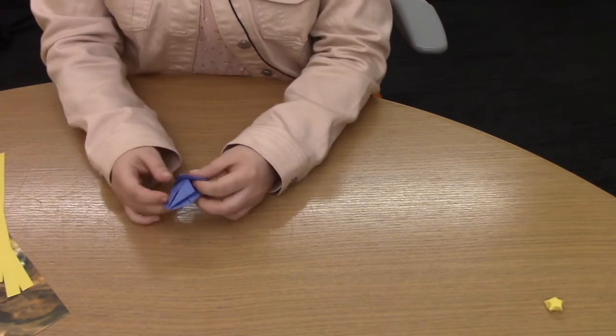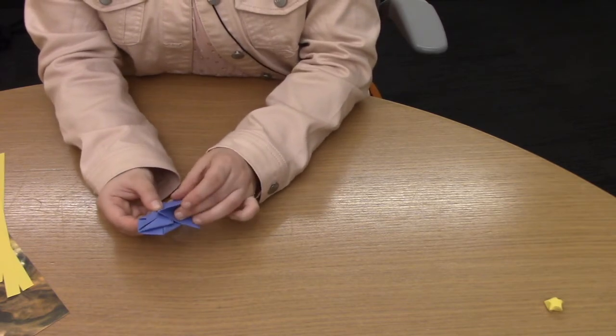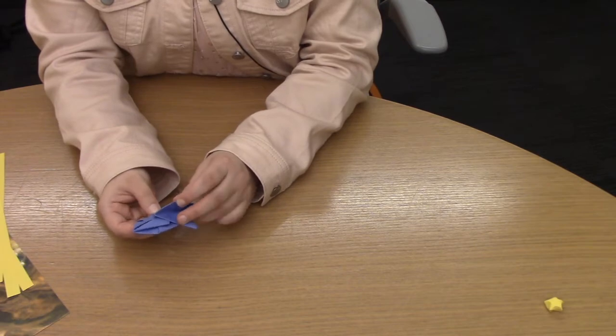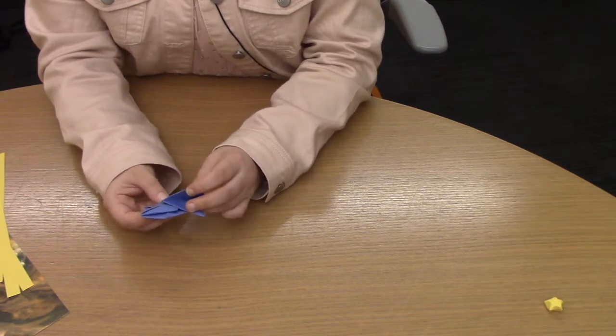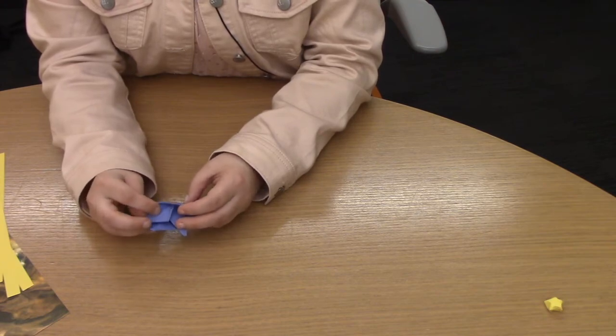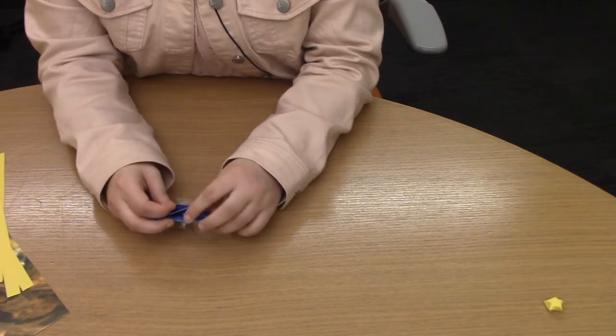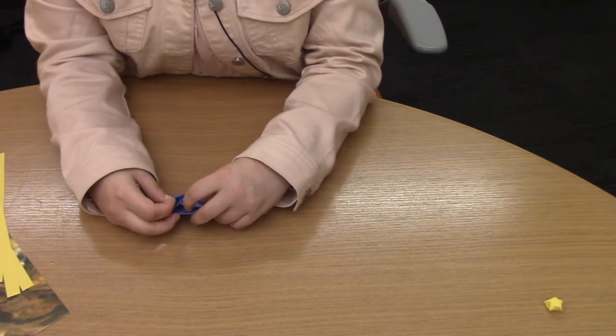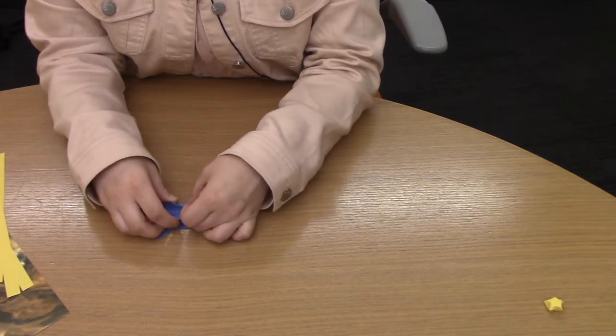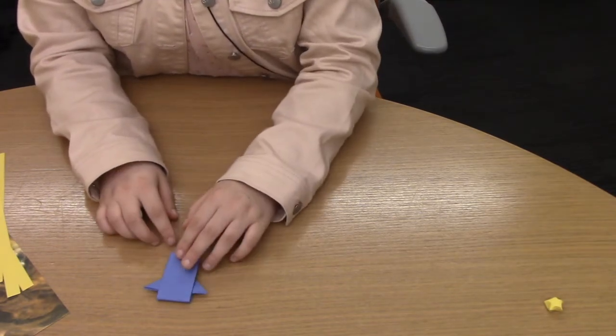And the final part is that now that this is all folded up like this, we've created this flap. And then you're going to fold the bottom part of that diamond shape and tuck it in. And then once you flip this over it becomes a little rocket.